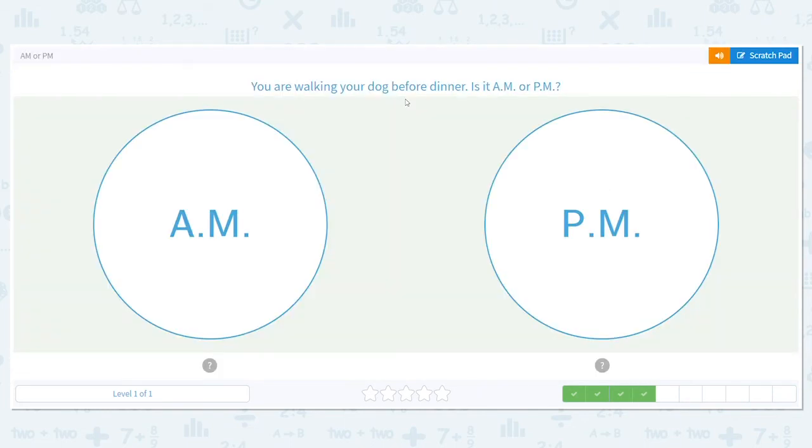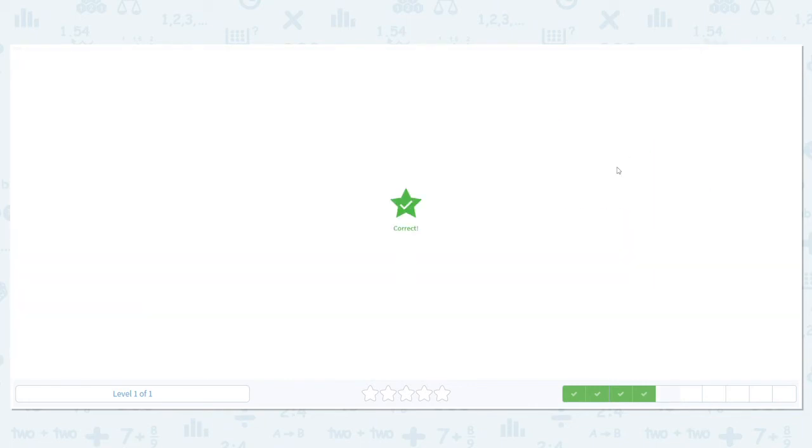You're walking your dog before dinner. A.M. or P.M.? What's our keyword in this sentence? Dinner. Dinner is the keyword here. When do you eat dinner? Do you eat that in the morning or do you eat that in the evening? Eat that in the evening, so that would be P.M. Good job.